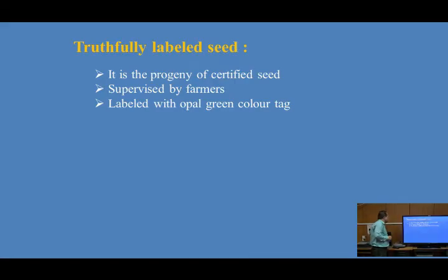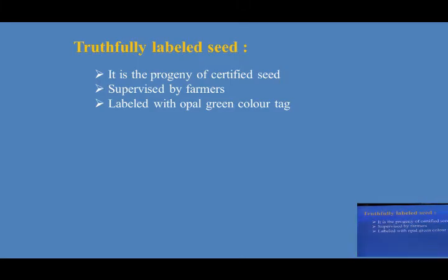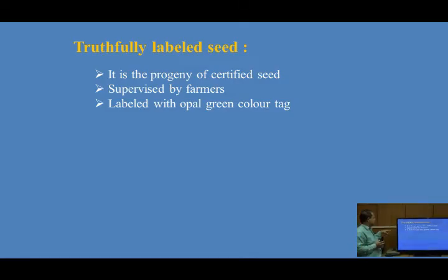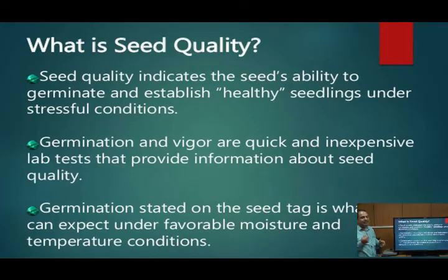One more thing is the truthfully labeled seeds. In case of scarcity of seed availability, we permit the use of TL seeds to the farmers. It should be supervised by the farmers and labeled with the opal green colored tag. It should have proper germination percentage and genetic and physical purity as prescribed by the standard of ISTA — the International Seed Testing Association.